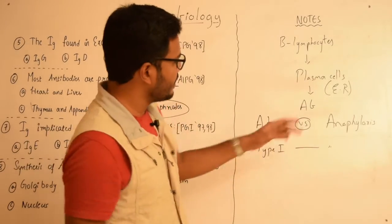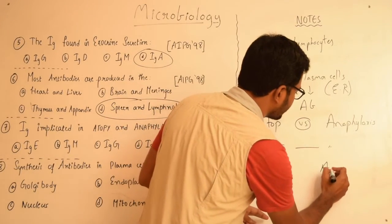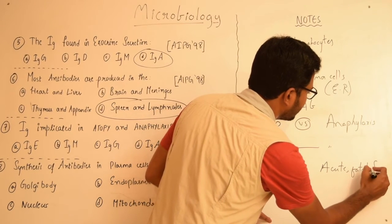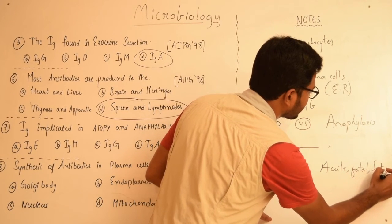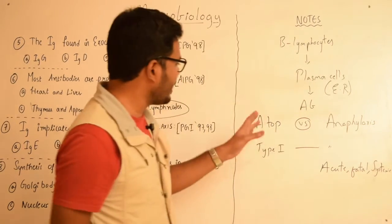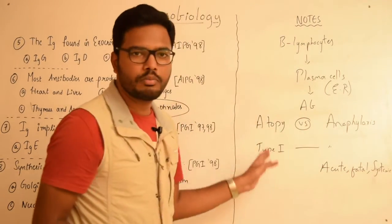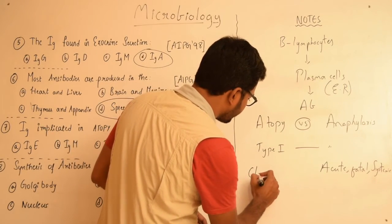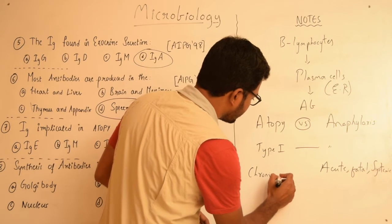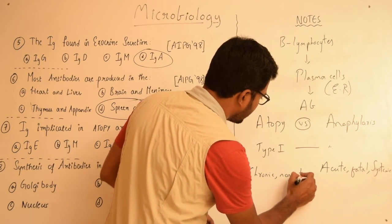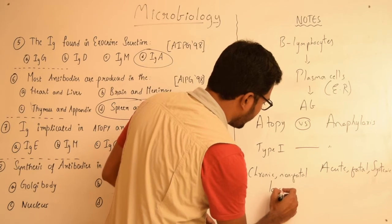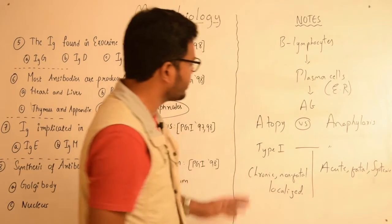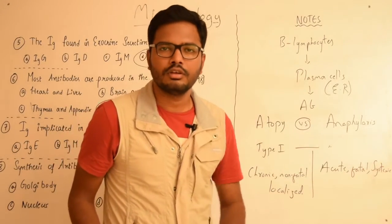However, the difference lies in this: anaphylaxis is an acute, fatal, and systemic kind of reaction, whereas atopy is quite opposite to that of anaphylaxis. Atopy is chronic, it's non-fatal, and a localized form of type 1 hypersensitivity reaction.